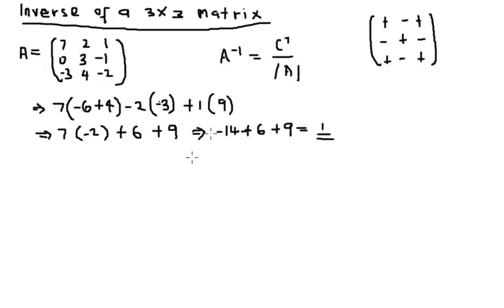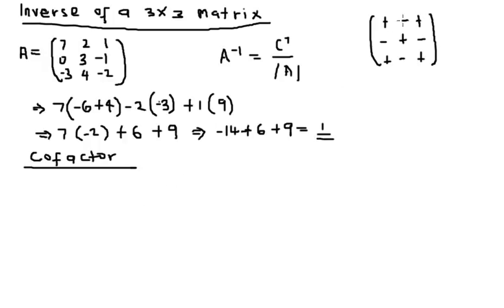The next thing we do is find the cofactor of our matrix. To find the cofactor, we reference the sign table. We take the determinants of all 2x2 sub-matrices — for each element we eliminate its row and column and pick what remains. Let's get started.